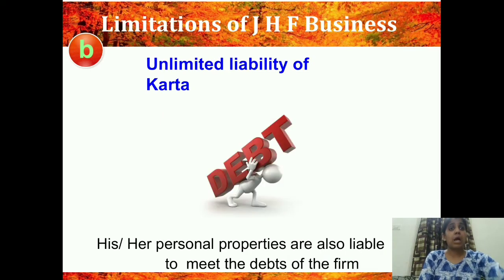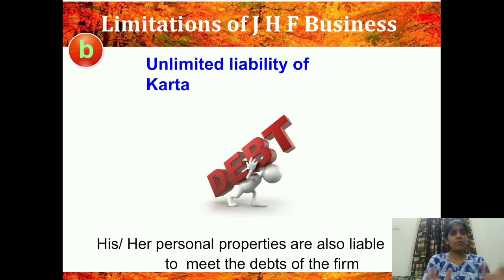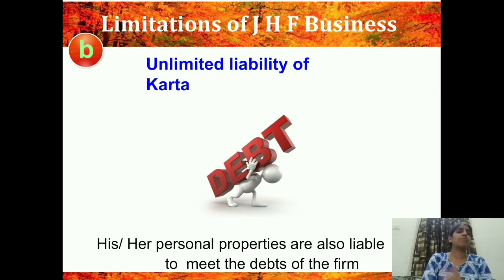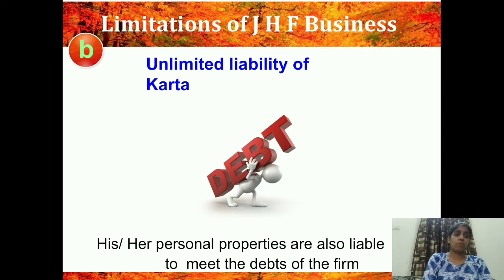The second limitation is unlimited liability of the Kartha. From the Kartha's point of view, his liability is ultimately unlimited. Everyone is enjoying the fruits but he is ultimately the head whose liability is unlimited. He or she is even liable to pay from personal property if needed to meet the debt of the firm — the Kartha might have to bring personal jewellery or anything to pay the debt, while other members do not have to.